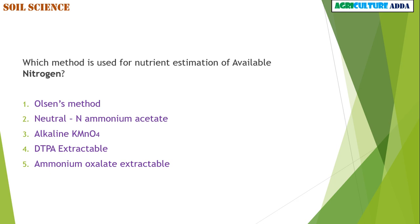Next question: which method is used for nutrient estimation of available nitrogen? Please read the question properly — it asks about nitrogen. Options are: Olsen's method, neutral ammonium acetate, alkaline KMnO4, DTPA extractable, and ammonium oxalate extractable. The answer is alkaline KMnO4.